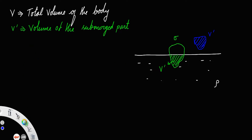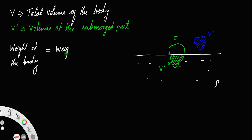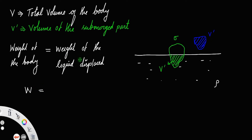The condition of equilibrium, or the floating condition, is that the weight of the body must be equal to the weight of the liquid displaced. Let the weight of the liquid displaced be called W dash.